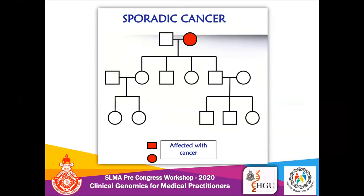There are three main types of cancers: sporadic, familial, and hereditary. Looking at this family tree — also known as a pedigree — in the sporadic type, there are three generations shown with only one affected individual. The age of onset of these cancers is very late, maybe in the 60s or 70s, and there are no other affected individuals across several generations of that pedigree.